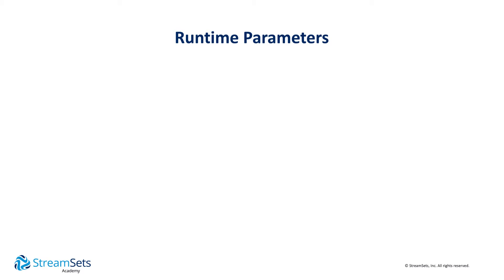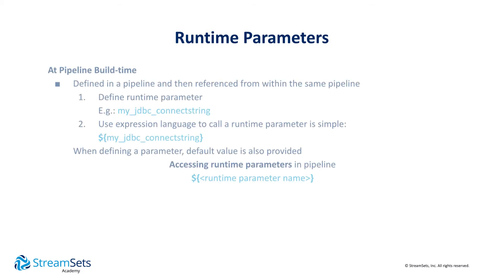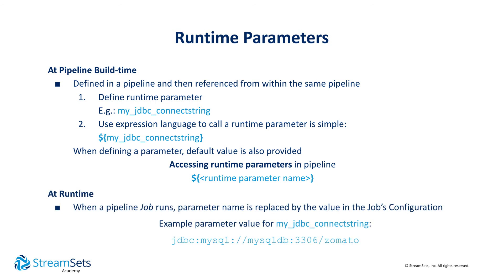Expressions can also be evaluated by referencing runtime values such as parameters, environment variables, and reading from resource files. For runtime parameters, they are defined at pipeline build time. First, define the parameter name. Second, use the EL enclosure to reference the parameter anywhere in your pipeline that accepts runtime parameters, such as a JDBC connection URI field.